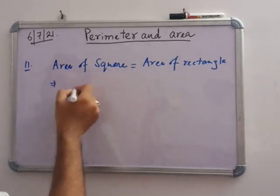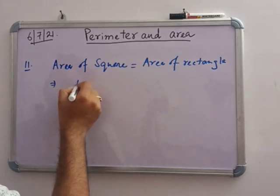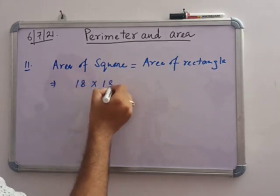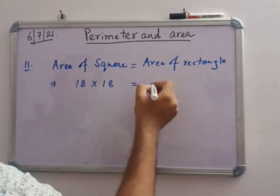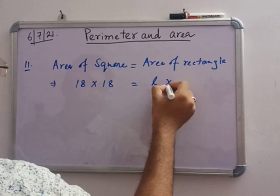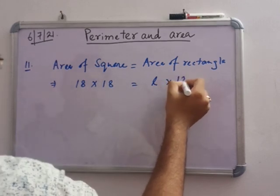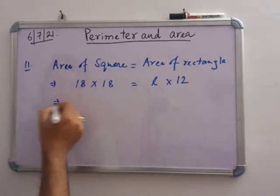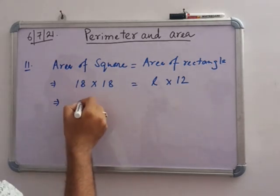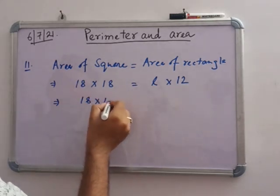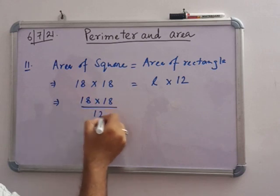Area of the square is side into side, that means 80 into 80. And width is given as 12. So breadth is 12, length is not given. You have to find the length.